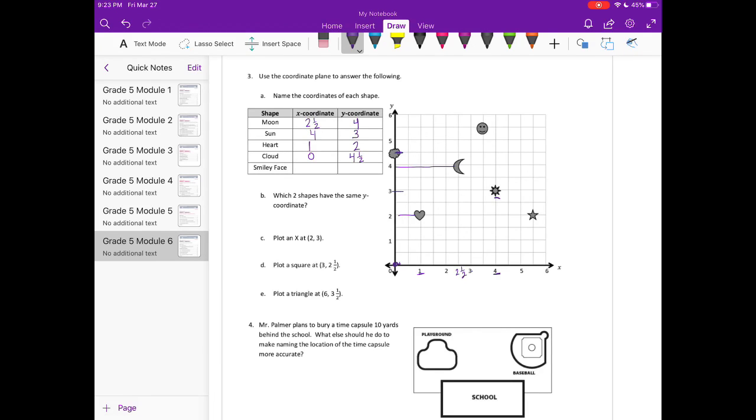And then the smiley face: the x-coordinate, let's move down, is right there, three and a half, and then the y-coordinate is five and a half. Which two have the same y-coordinate? So we're looking for ones that would be the same going along this y-axis, and so the only place I can draw a line and two will cross would be the star and the heart.